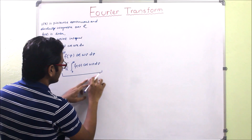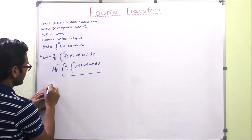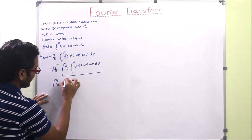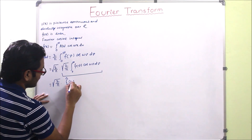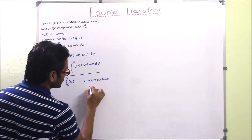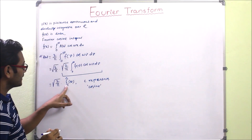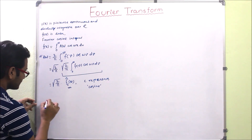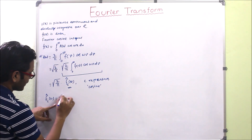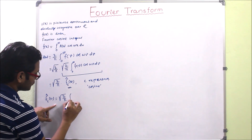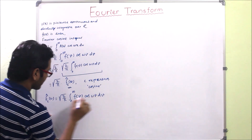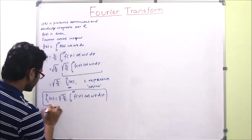That factor is F̂_c(w), where 'c' represents cosine. So the Fourier Cosine Transform is defined as: F̂_c(w) = √(2/π) ∫₀^∞ f(v) cos(wv) dv. This is Equation 1.